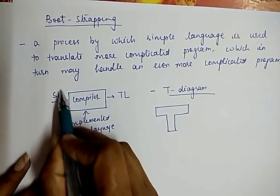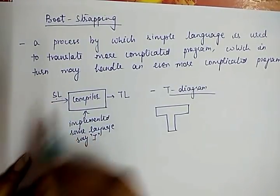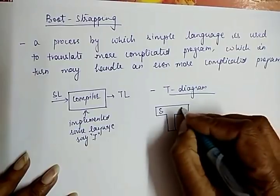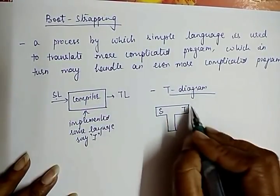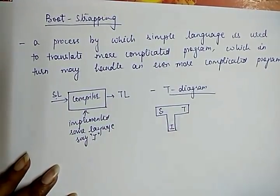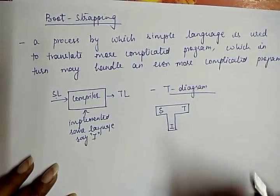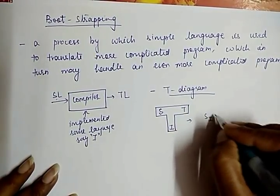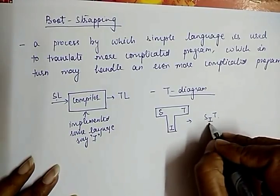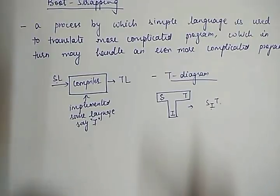In the T-shaped diagram, at the center side we have SL, which is the source language. I denote the source language as S, the target language as T, and this source language is converted into the target language by using some compiler implemented in language I. I denote this as S-I-T, meaning the source side is S, the receiver side is T, and the compiler is implemented in language I.